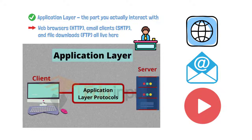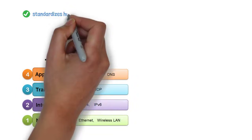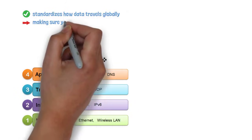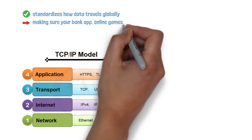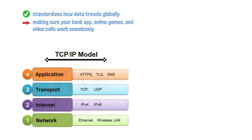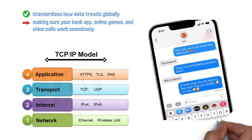So why should you care? The TCP/IP model standardizes how data travels globally, making sure your bank app, online games, and video calls work seamlessly. Whether you're next door or on the other side of the planet, it's the digital postal system, ensuring every message finds its way quickly and reliably.